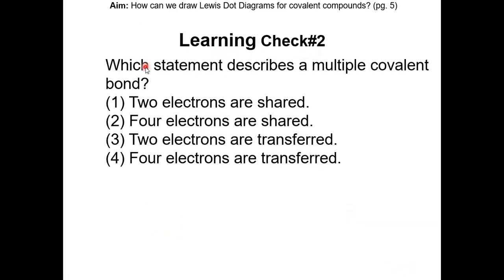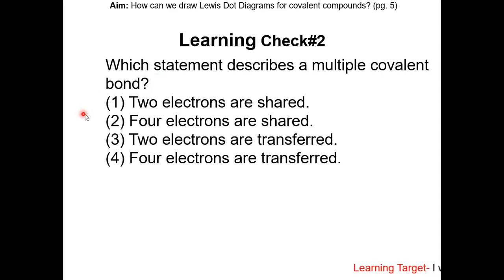Learning check number two: Which statement describes a multiple covalent bond? Pause the video and resume once you complete this. Covalent means shared, so choices three and four are wrong. A multiple covalent bond can be a double or triple bond. A single bond is only two electrons that are shared, so choice one is wrong. The best answer is choice two.